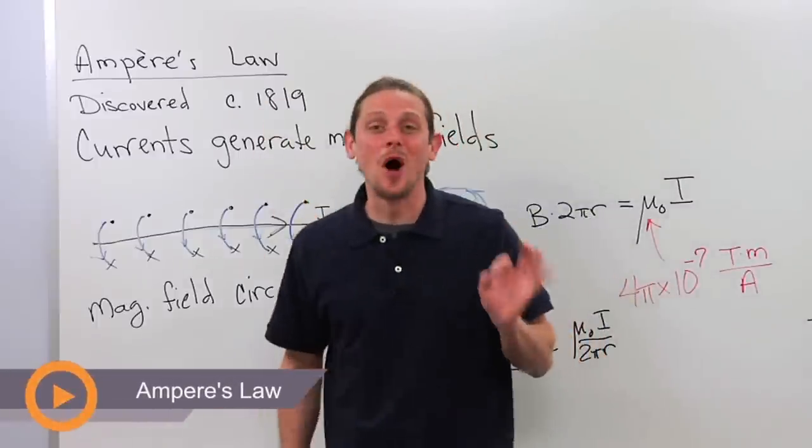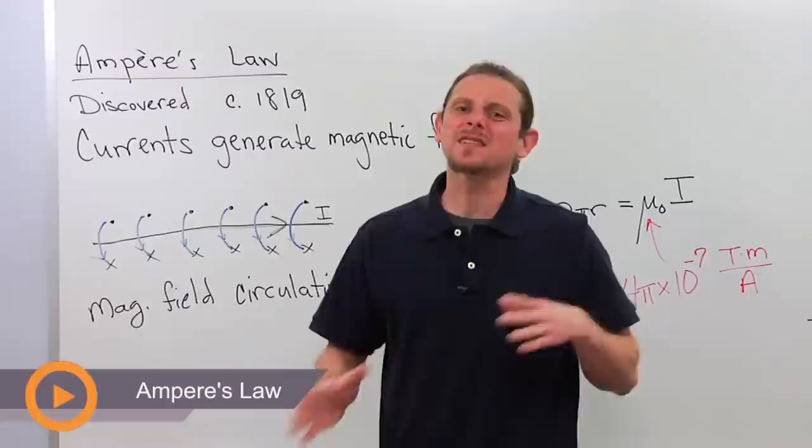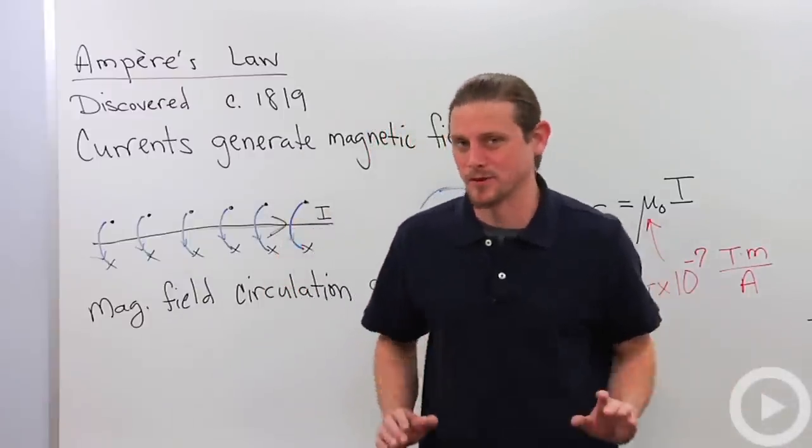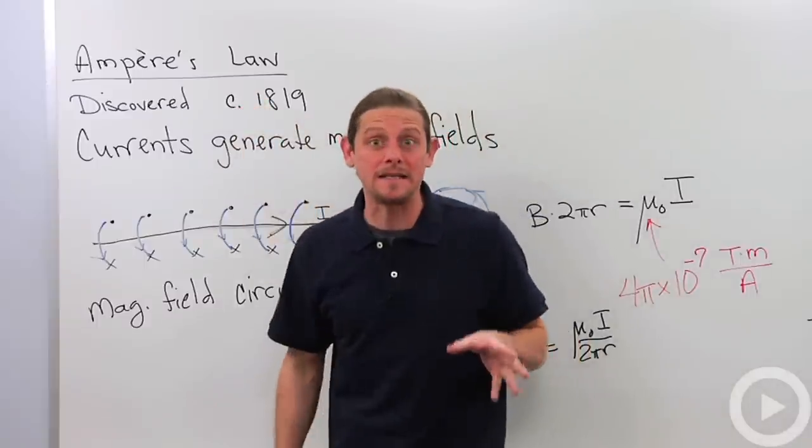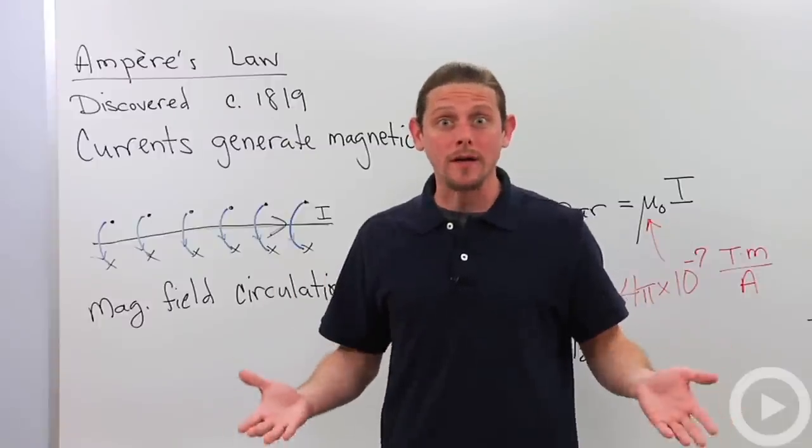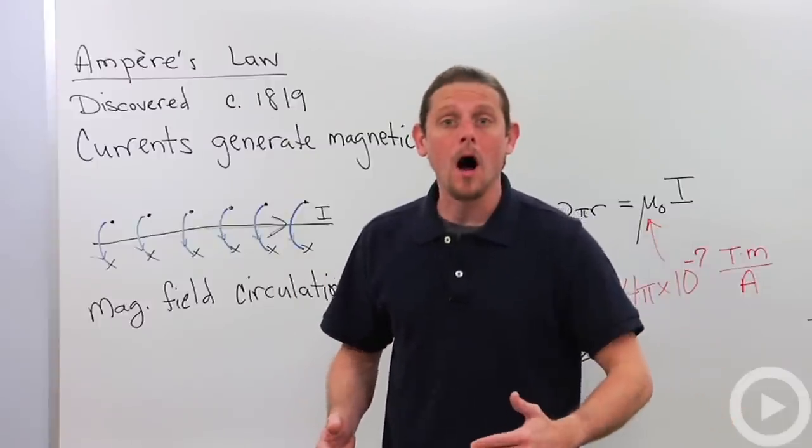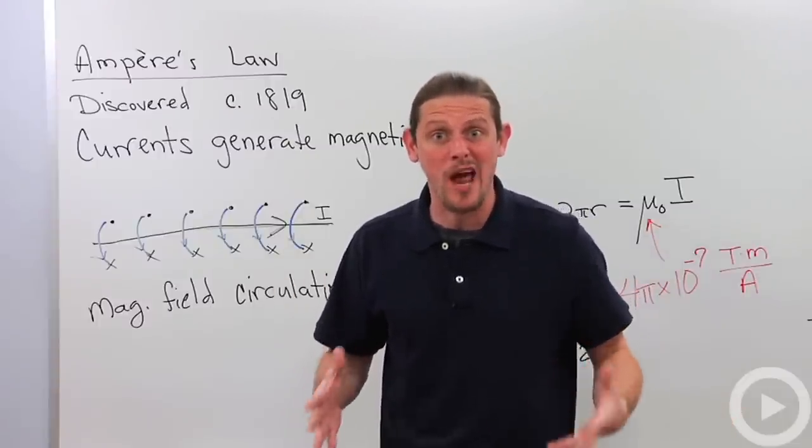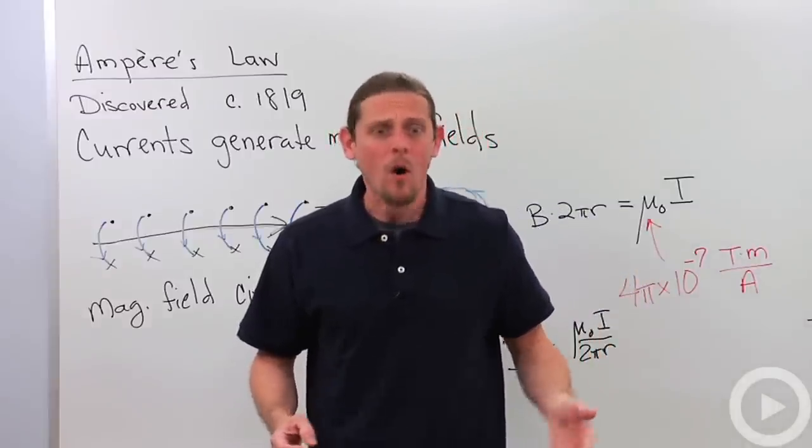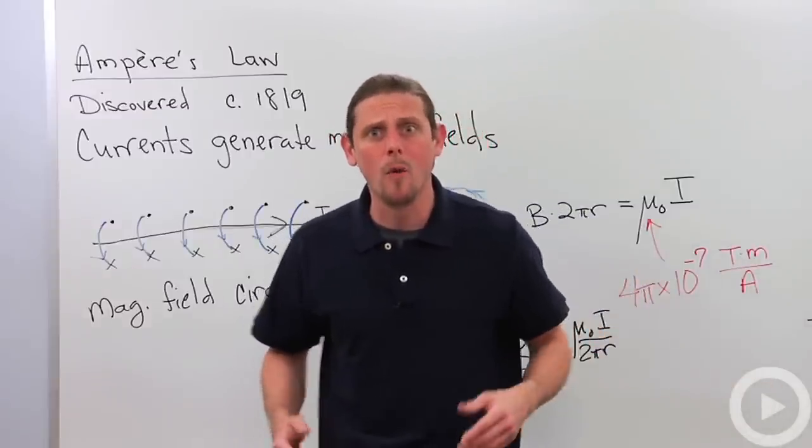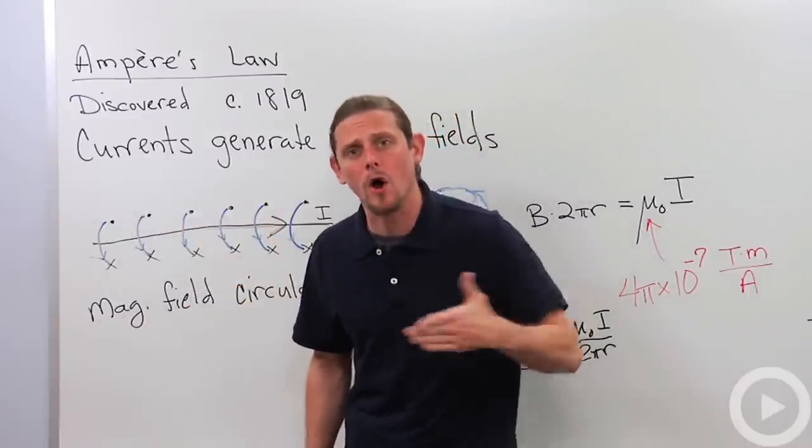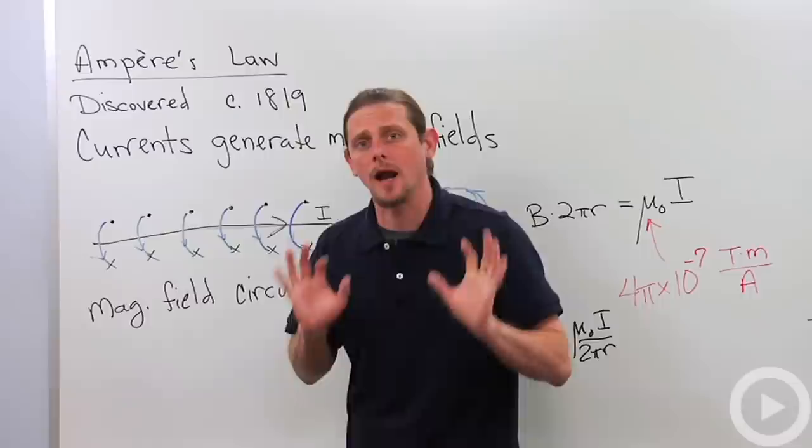So let's talk about Ampere's law. Ampere's law was discovered, well, the effect behind Ampere's law was discovered around 1819, actually by a physics lecturer who was in the middle of a lecture and he noticed that a magnetic field was generated that moved around a compass needle when he ran a big current through a wire. So the law basically says that currents, if I run a current, it will generate a magnetic field.